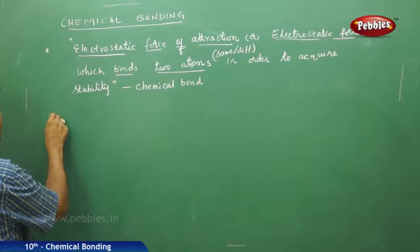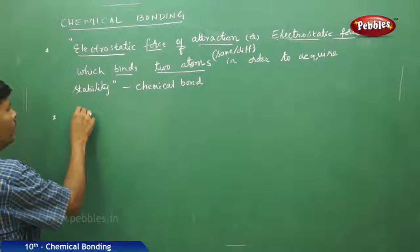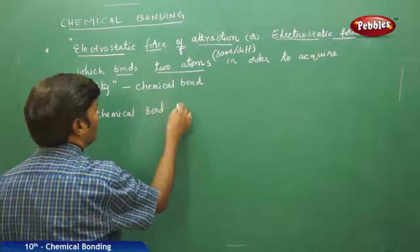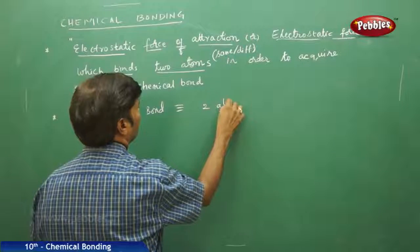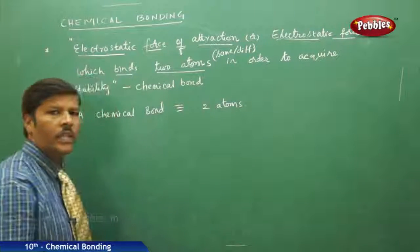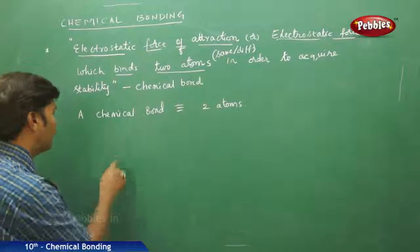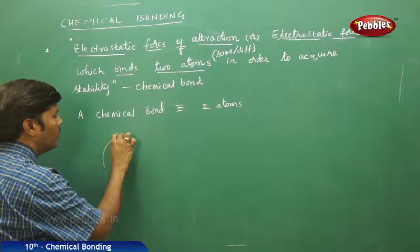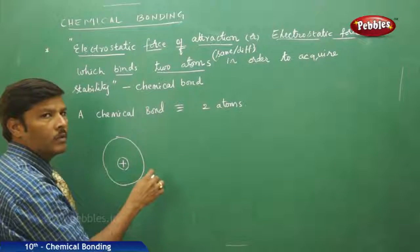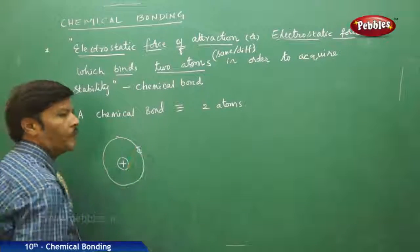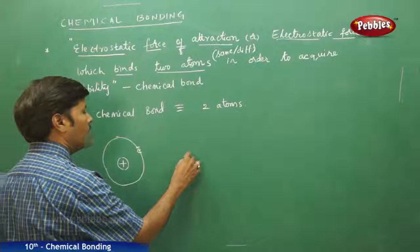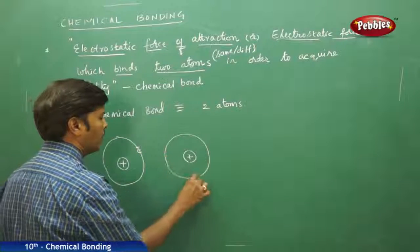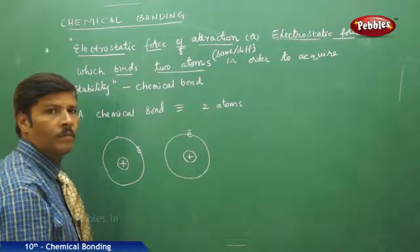When you go for chemical bond, a bond formation always takes place between two atoms. Suppose I am taking the first atom with a positively charged nucleus and one circular path, that is orbit, which is housed with the electron, and another atom with a positively charged nucleus and again the circular path, that is orbit, placed with an electron.